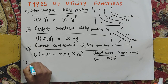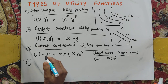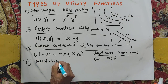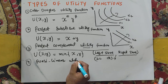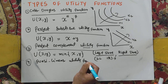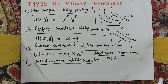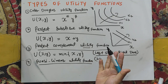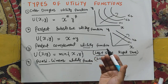The fourth type is the quasi-linear utility function. This function is a generalization of the perfect substitute utility function, where one good's utility is linear and the other good's utility is nonlinear.